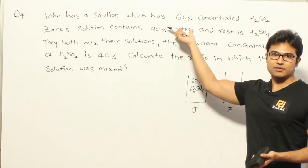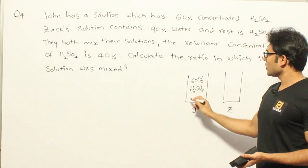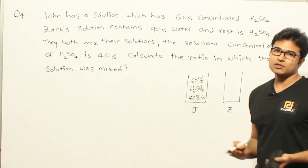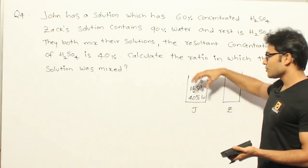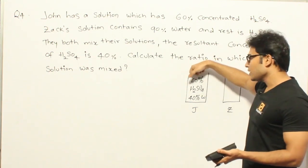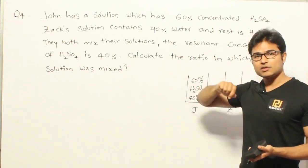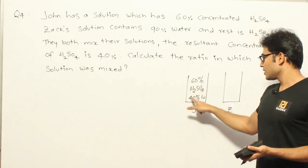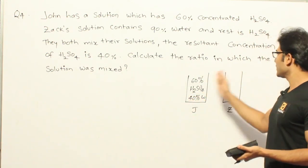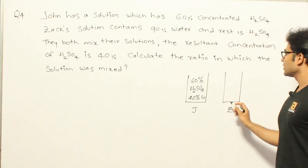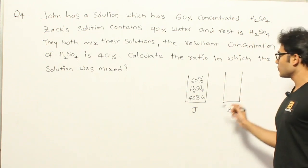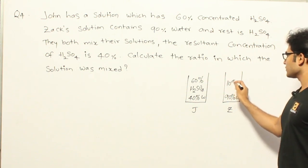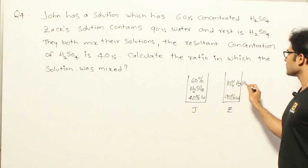The other liquid here is water. So John's solution has 40% water and 60% H2SO4. These two are mixed so well that even if you take N1 liters from this, 60% of N1 will be H2SO4 and 40% of N1 will be water. Now in Jack's solution, 90% is water, which means only 10% will be H2SO4. That is the composition of the liquids.